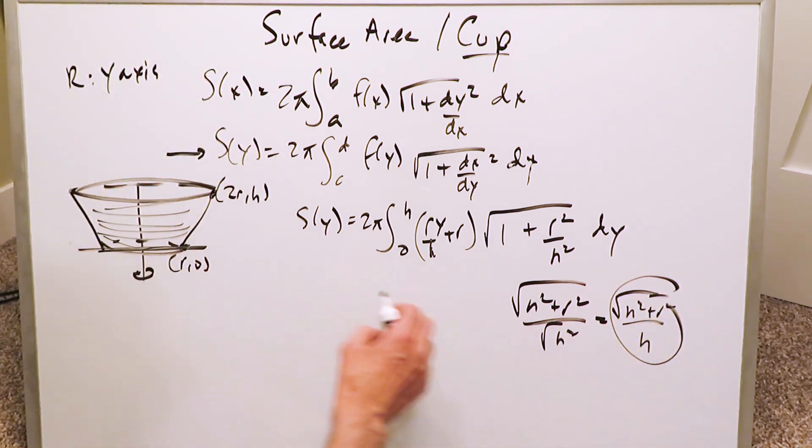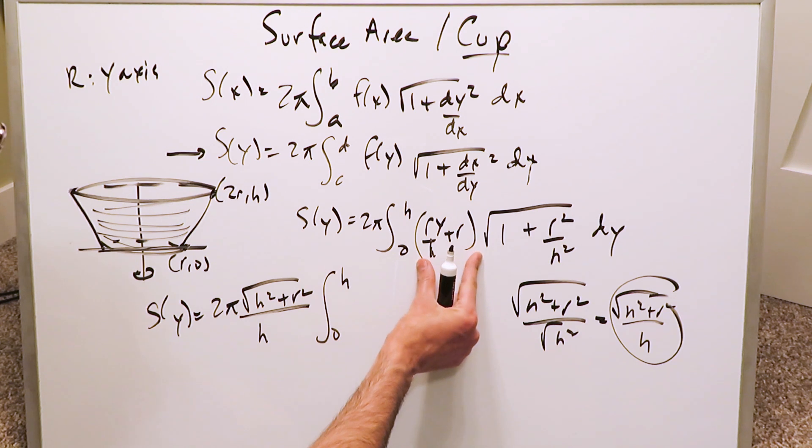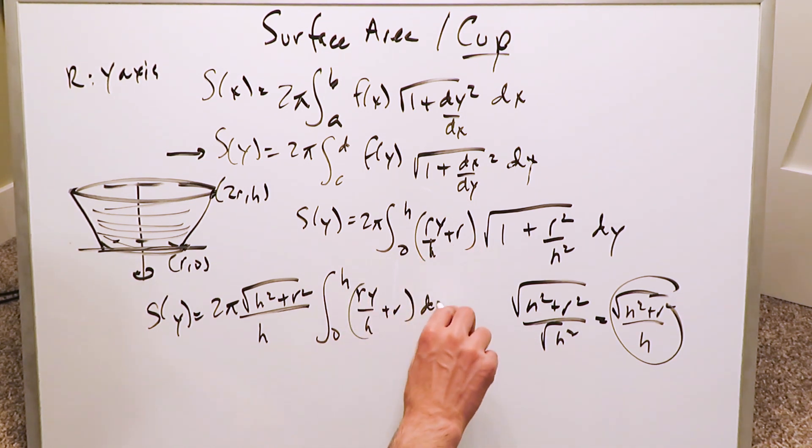All of this component right here can be brought out and attached with that 2π and it wouldn't be a bad idea to do it. So the surface area with regards to y equals 2π multiplied by √(h² + r²) divided by h. Then you still have this 0 to h in this part right here, which is ry/h plus r and then dy.